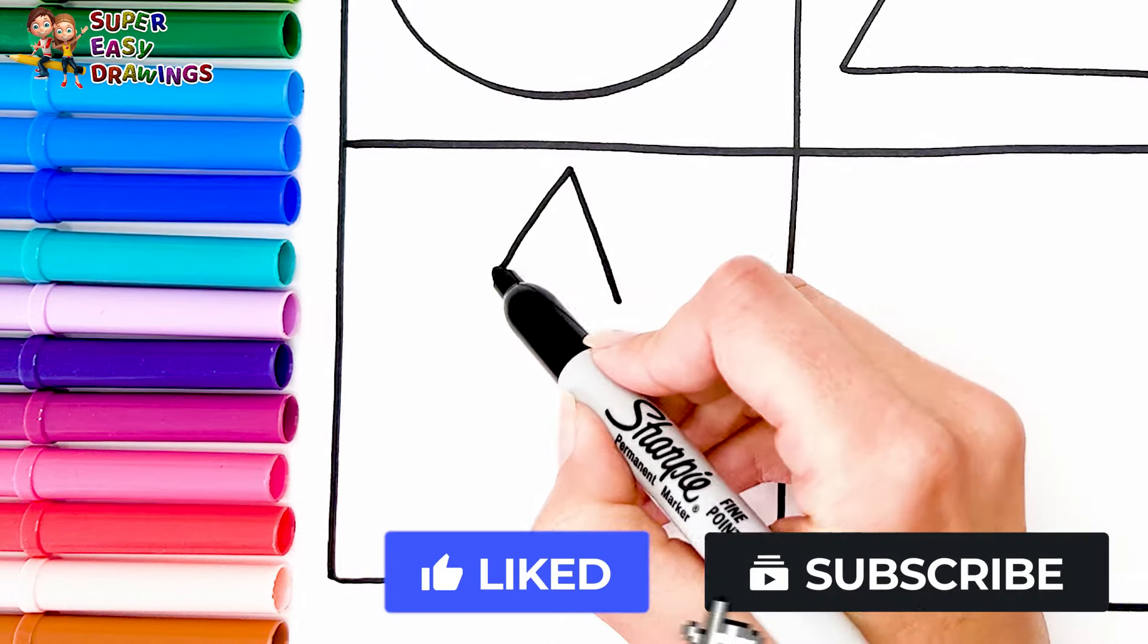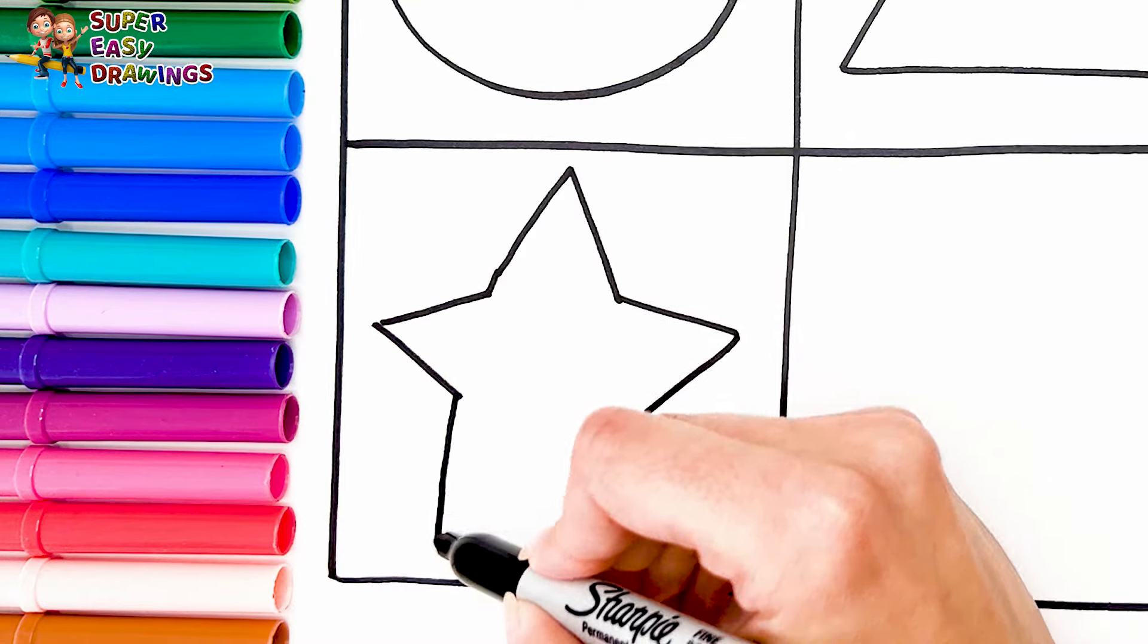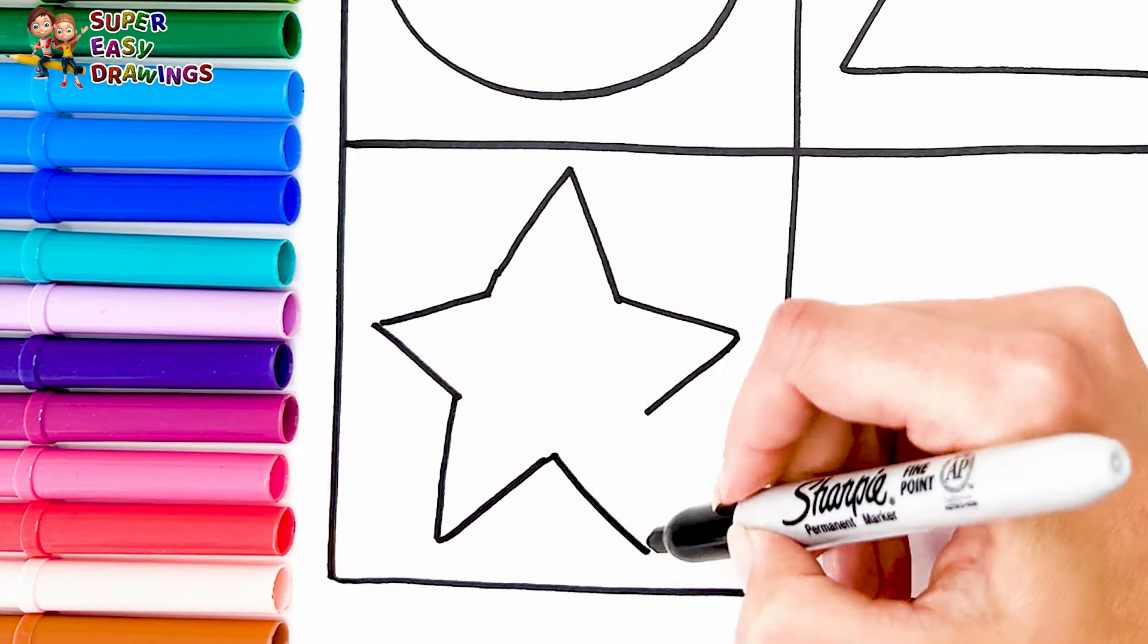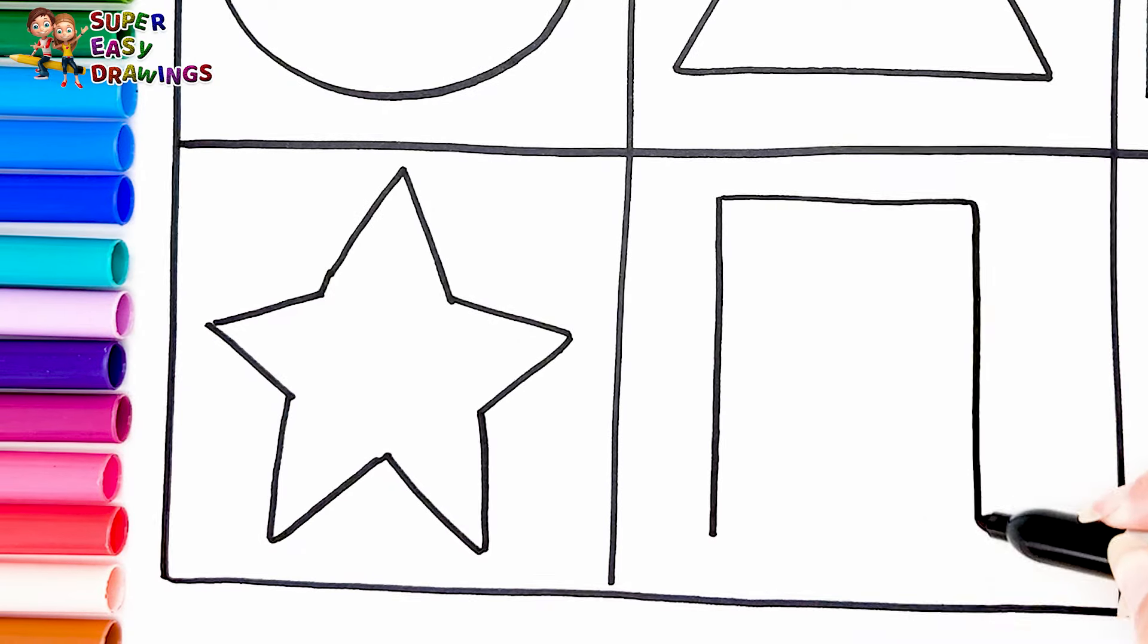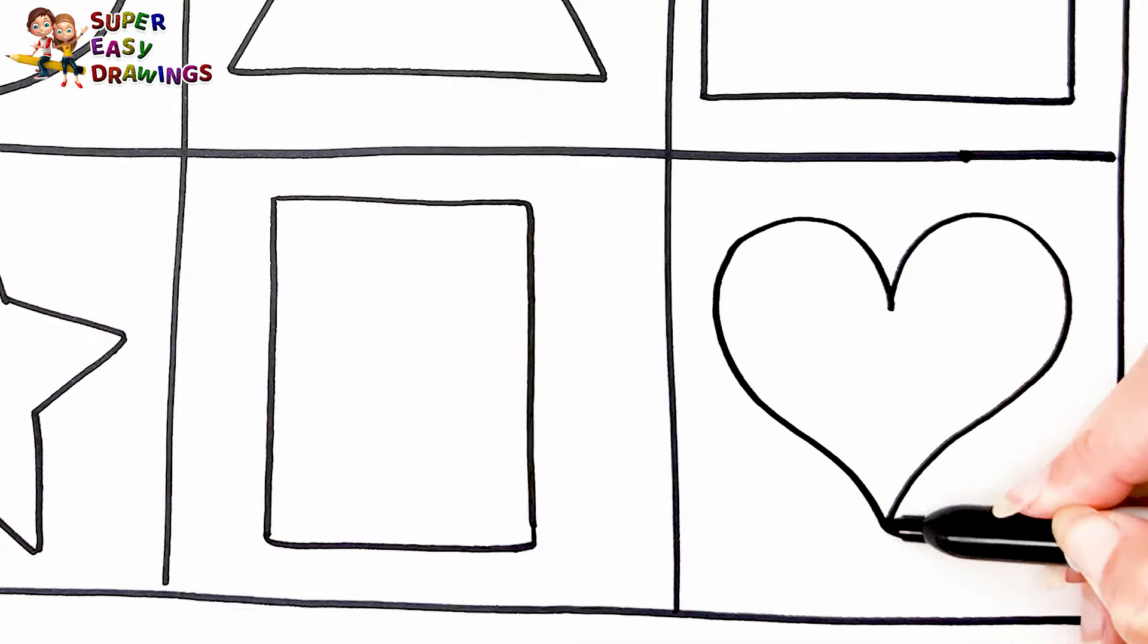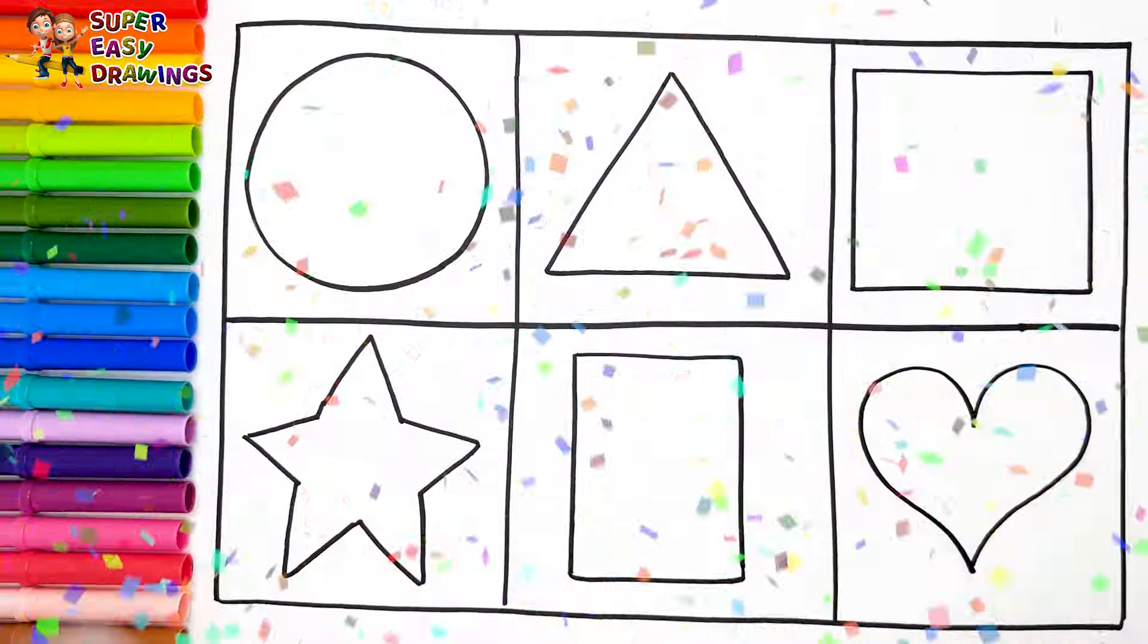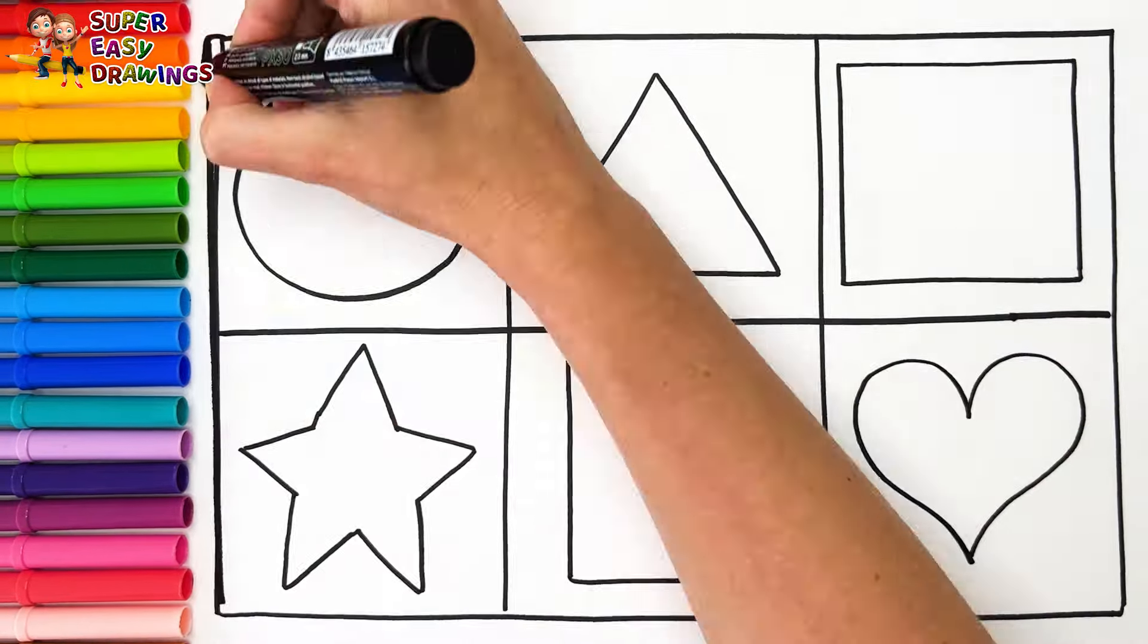Let's draw a star. The next shape will be the rectangle. The last is the heart shape. Hooray! Now I'm going to use this black marker to make this beautiful drawing more visible.